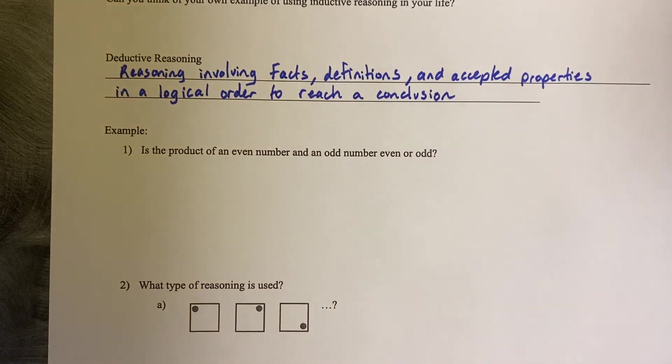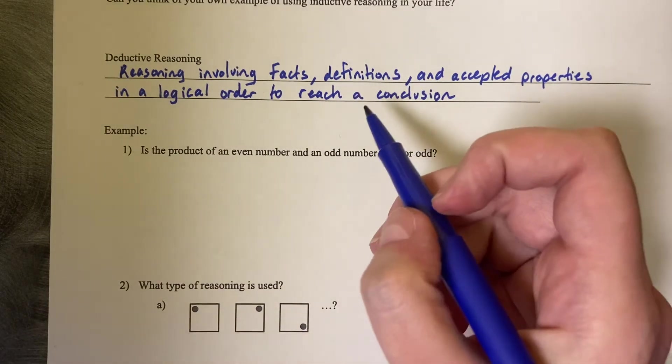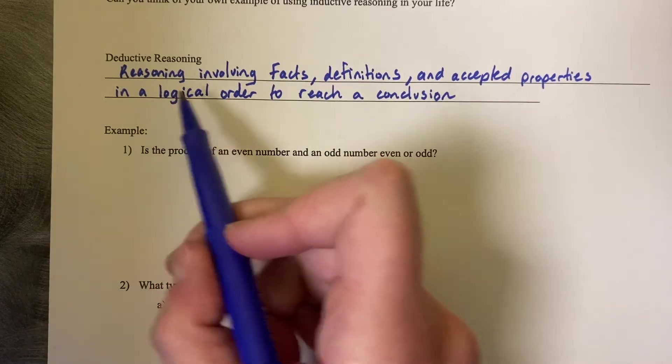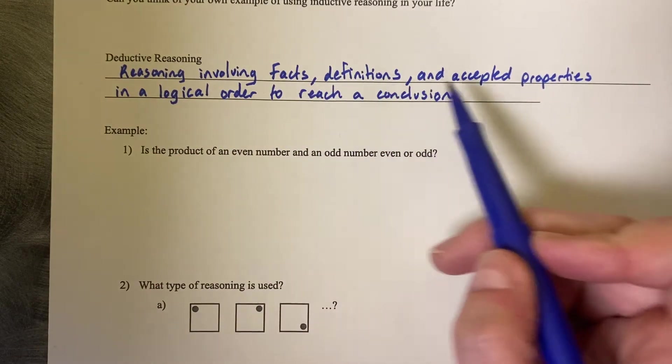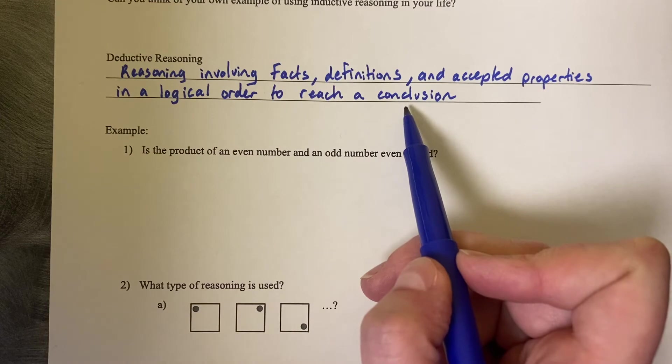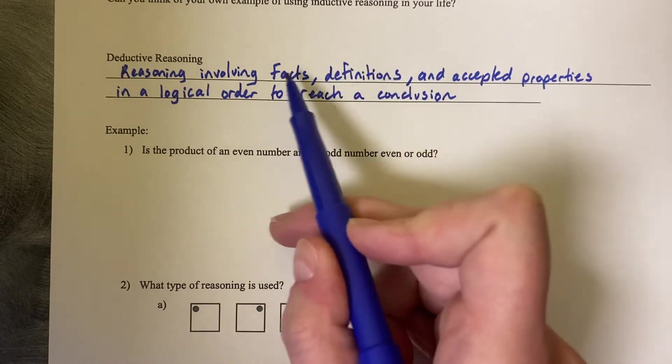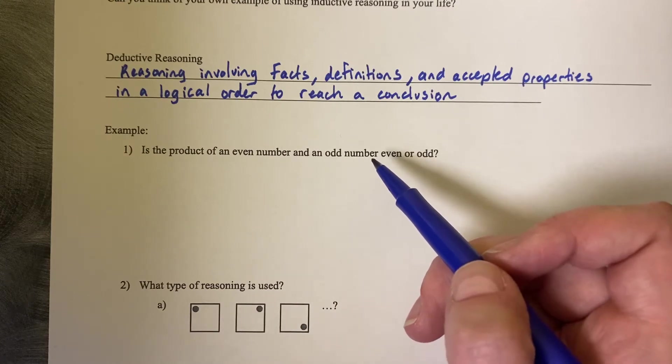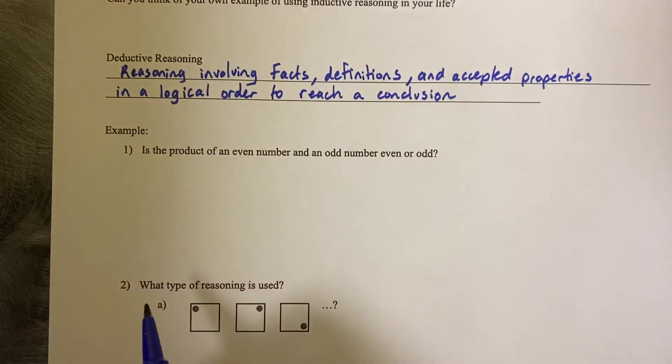This is a mathematical definition of deductive reasoning. In real life, you may not need to use accepted properties or definitions, but this is reasoning involving facts, definitions, and accepted properties mathematically. And then you put them in a logical order to reach a conclusion. So definitions and facts include things like segment addition postulate, or angle addition postulate, or vertical angles property, or linear pair property. These are the types of facts and definitions that we're going to use to help us do some deductive reasoning. We'll end up calling it proofs.